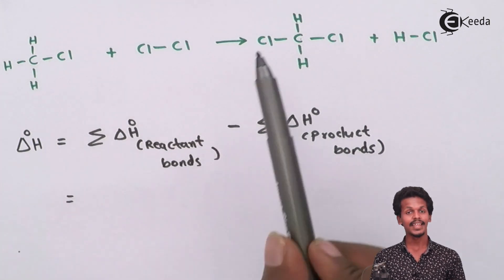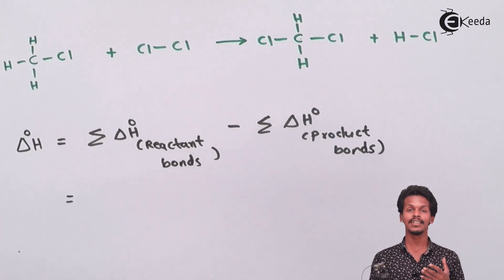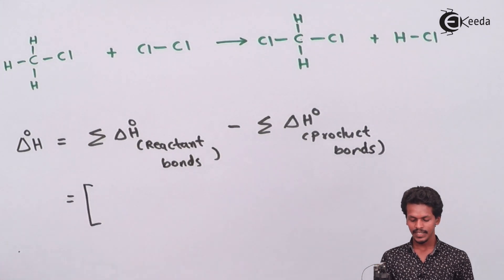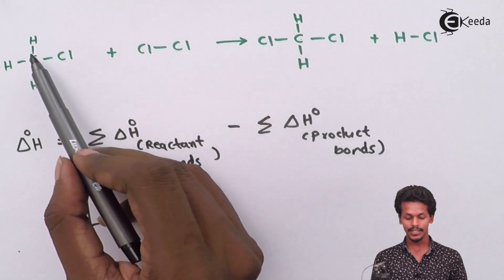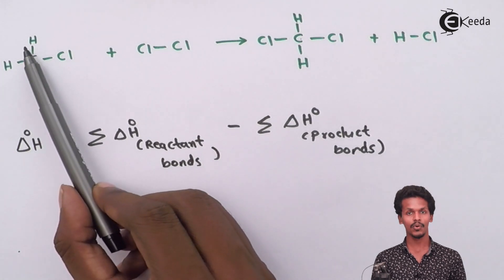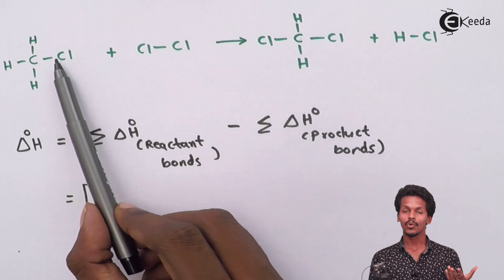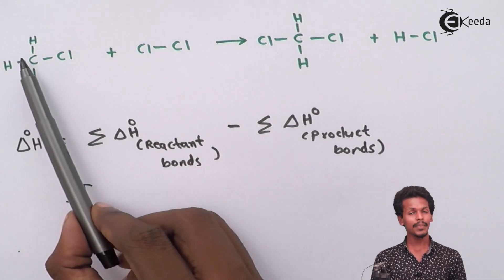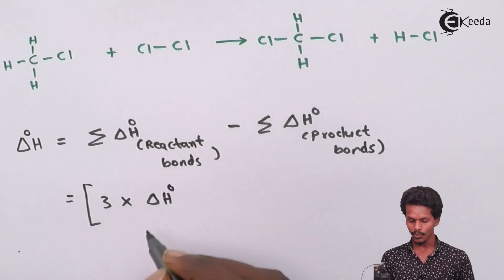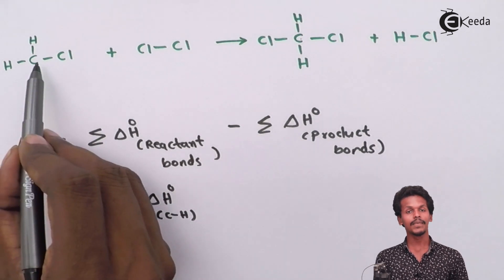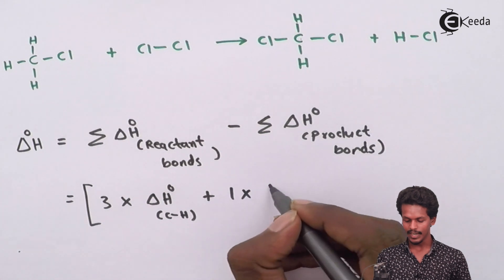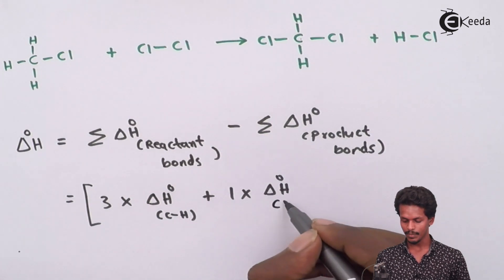Analyzing the reactants: in CH3Cl, there are three C–H bonds and one C–Cl bond. So the reactant bond enthalpy contribution is 3 × ΔH°(C–H) + 1 × ΔH°(C–Cl). For Cl2, we add 1 × ΔH°(Cl–Cl).